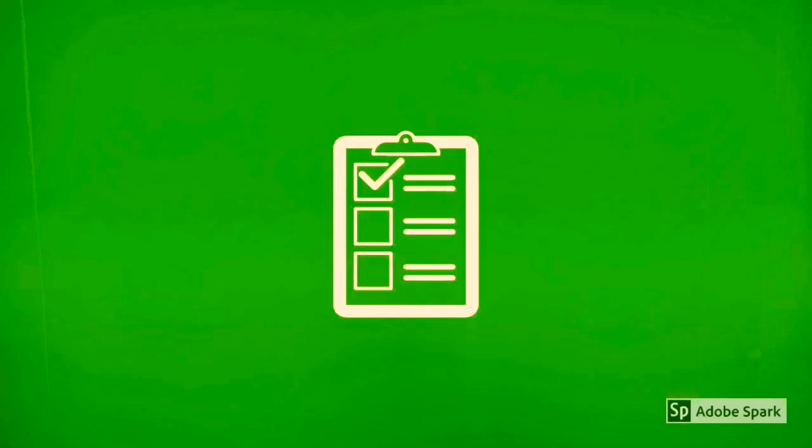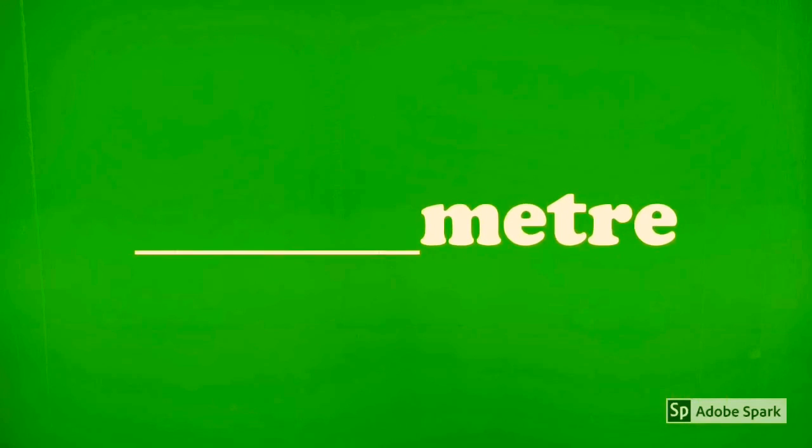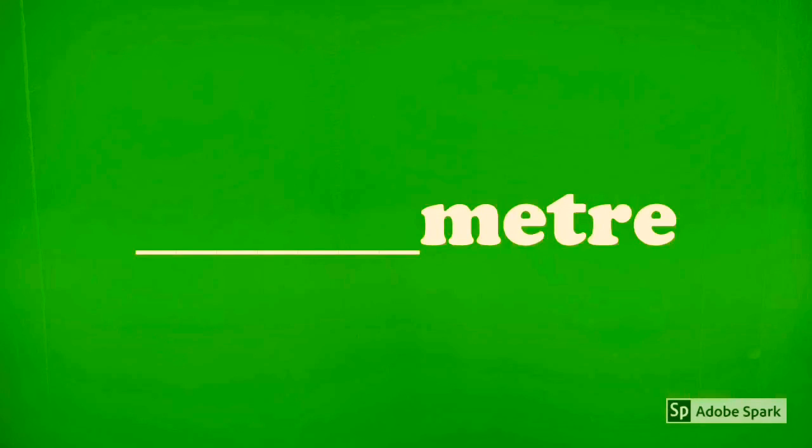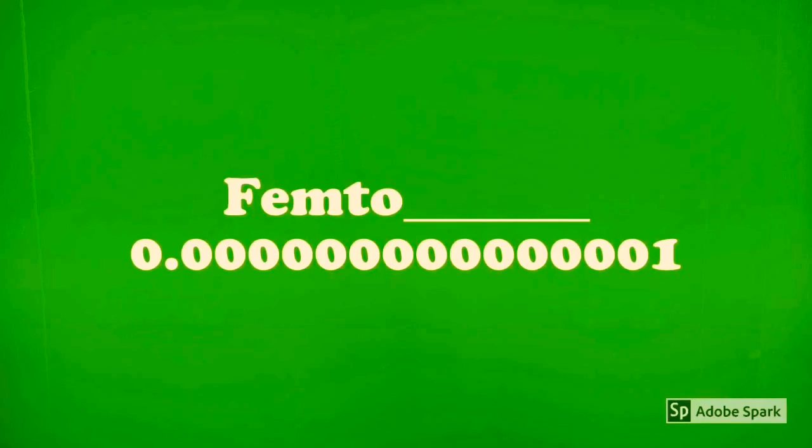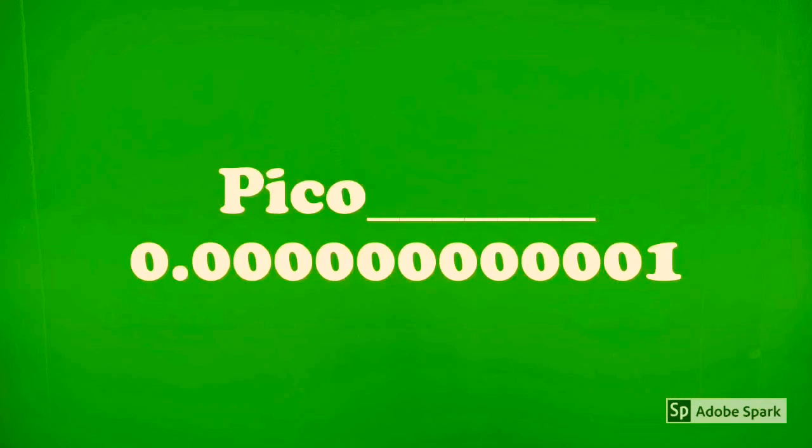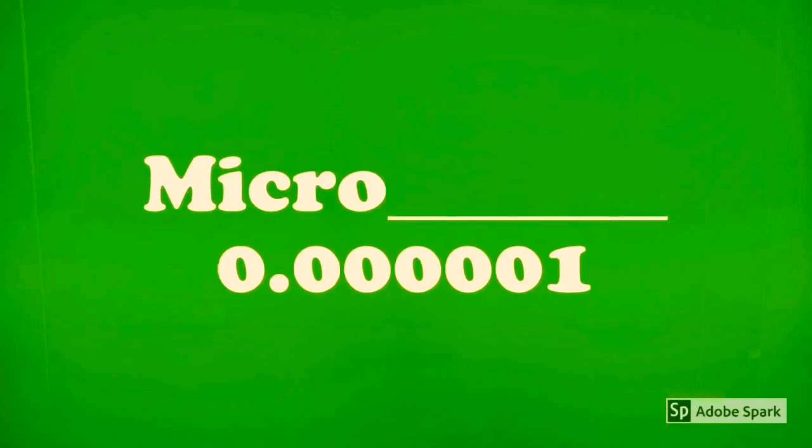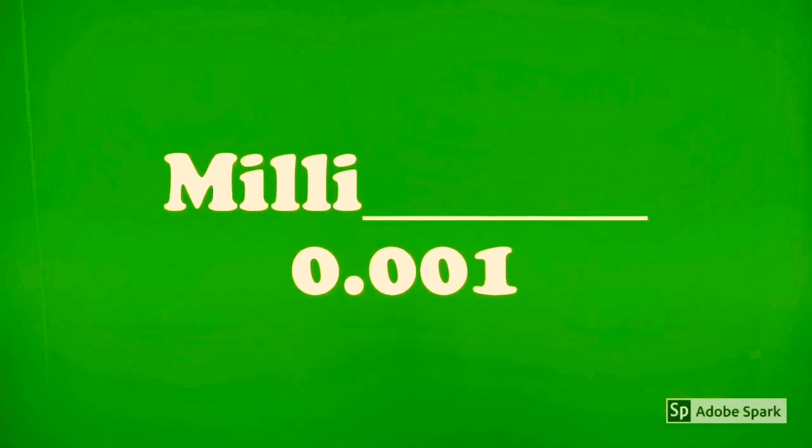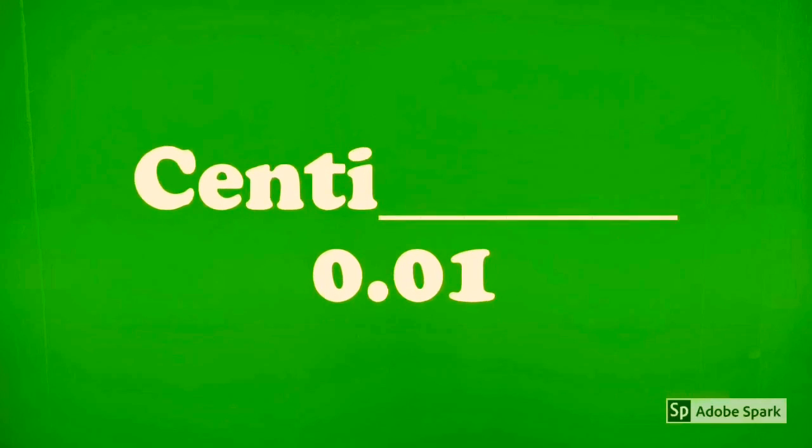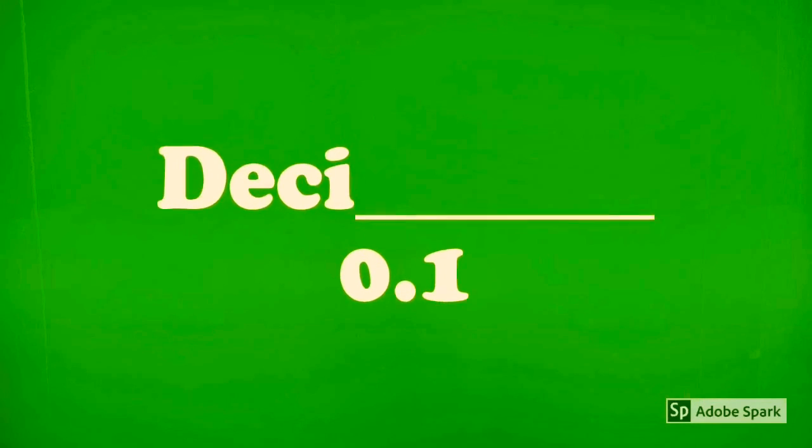Next on the agenda is to cover SI unit prefixes, the bits that go in the beginning, starting with femto, which makes a unit 10 to the negative 15th smaller. Then, the pico, which is 10 to the negative 12th. Nano, which is a billion times smaller than the base unit. Micro, which is a million times smaller. Milli is a thousand times smaller. Centi, a hundred, and deci, ten.